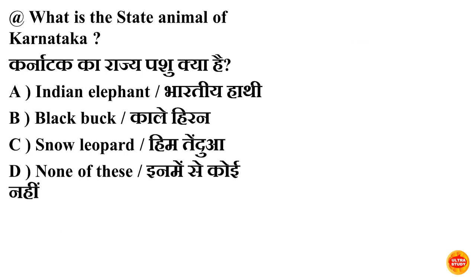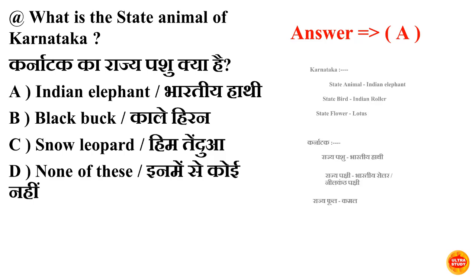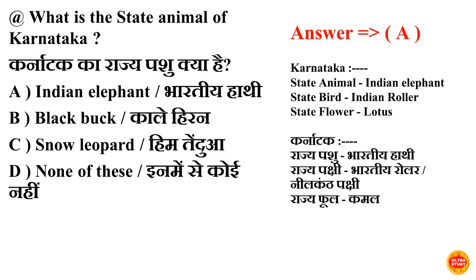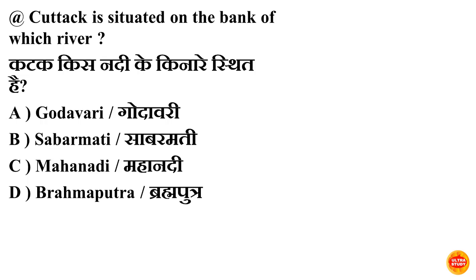Next question: what is the state animal of Karnataka? Karnataka ka rajya pashu kya hai? Option A is correct — Indian Elephant. Karnataka ka rajya pashu hai Bharatiya hathi. Aur Karnataka state bird hai Indian Roller, aur state flower hai Lotus (kamal).